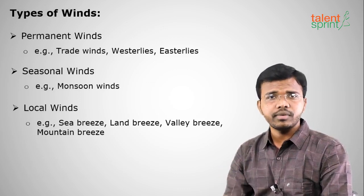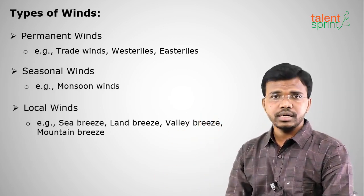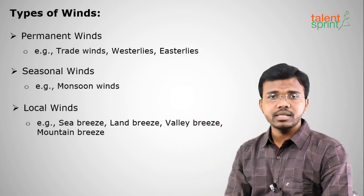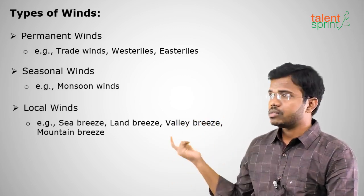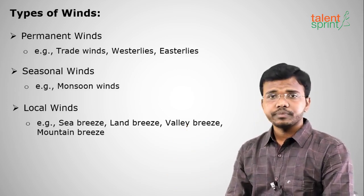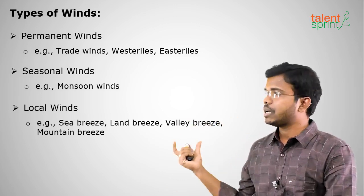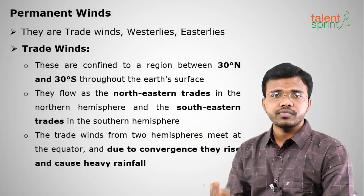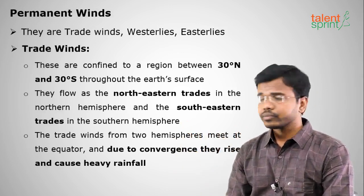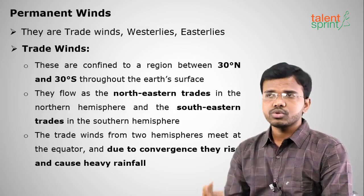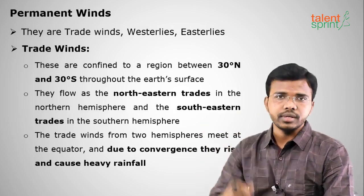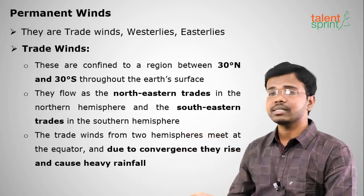There are three types of winds: first, permanent winds — which include trade winds, westerlies, and easterlies, also called planetary winds; second, seasonal winds, which come in one season and are not seen in another, for example monsoon winds; and third, local winds such as land breeze, sea breeze, and valley breeze, which are particular to a specific area. Permanent winds blow throughout the year. Trade winds got their name because historically traders who traveled on ships used to follow these winds to guide their journeys.